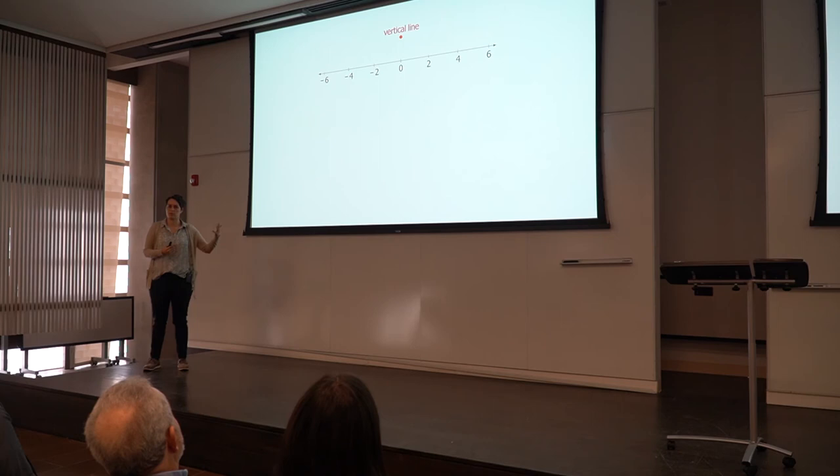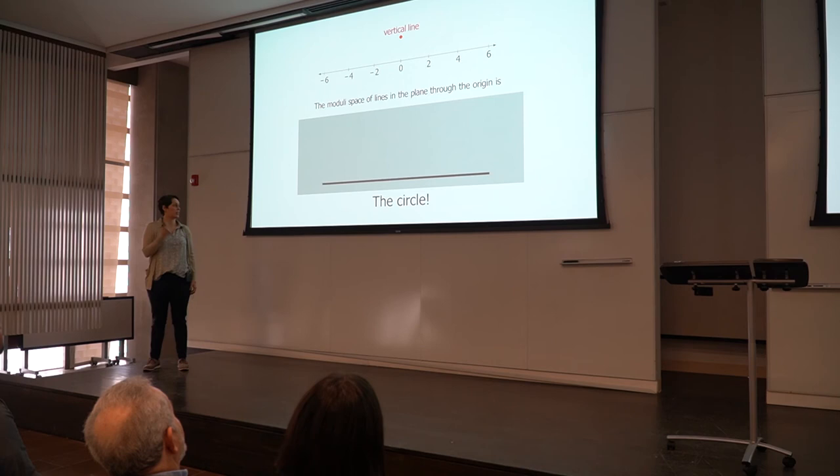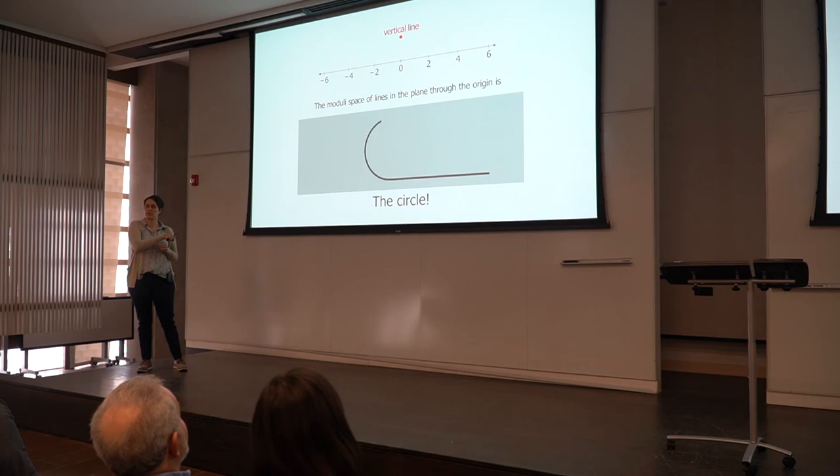And the way to do that is to think of the vertical line as being a line with both sort of positive infinite slope and also negative infinite slope. And so what I want to do is sort of connect positive and negative infinity with this extra point. And we can exactly do that by sort of gluing those things together and getting a circle. So every point in the circle exactly corresponds to a line in the plane through the origin.